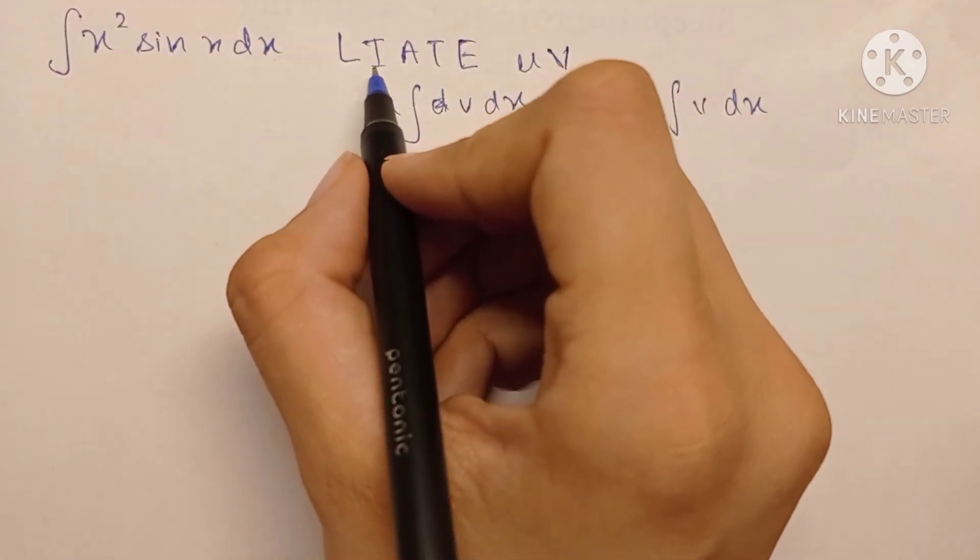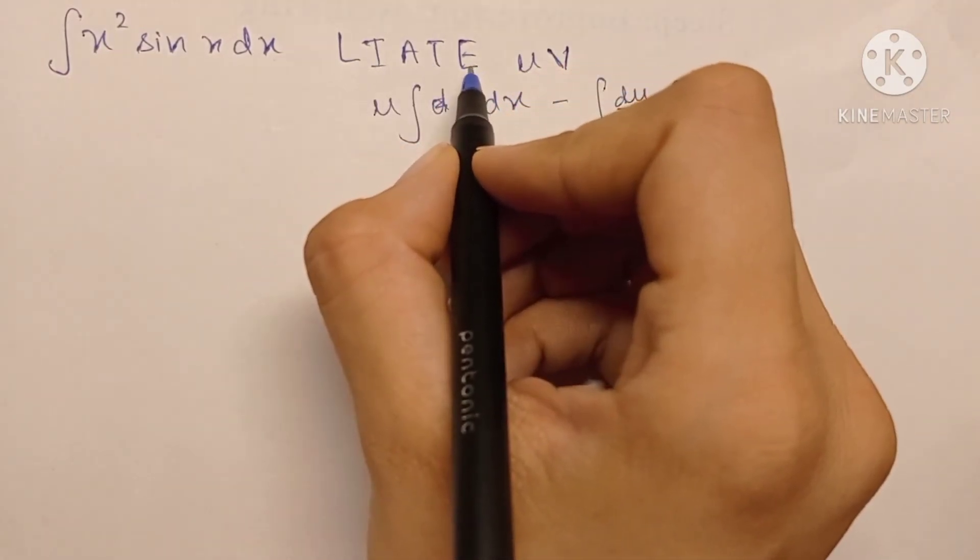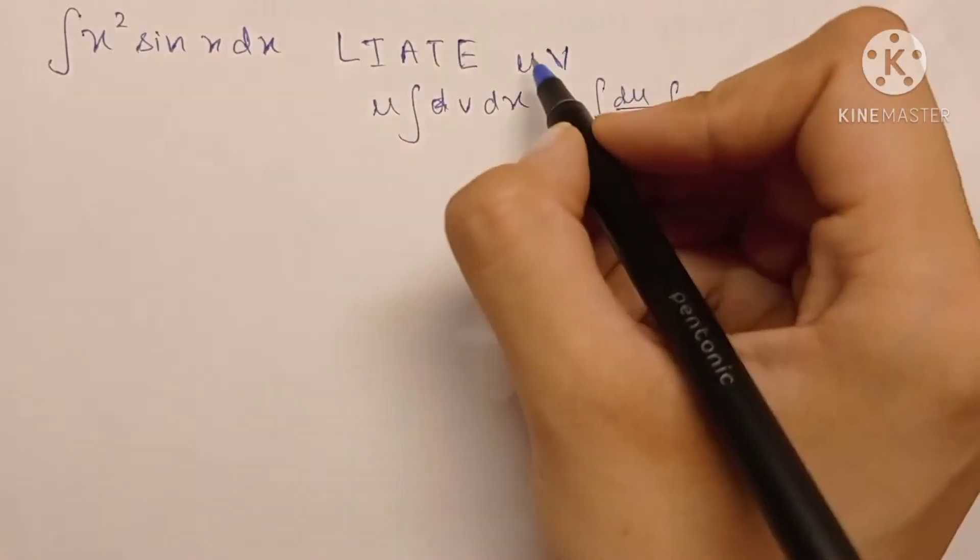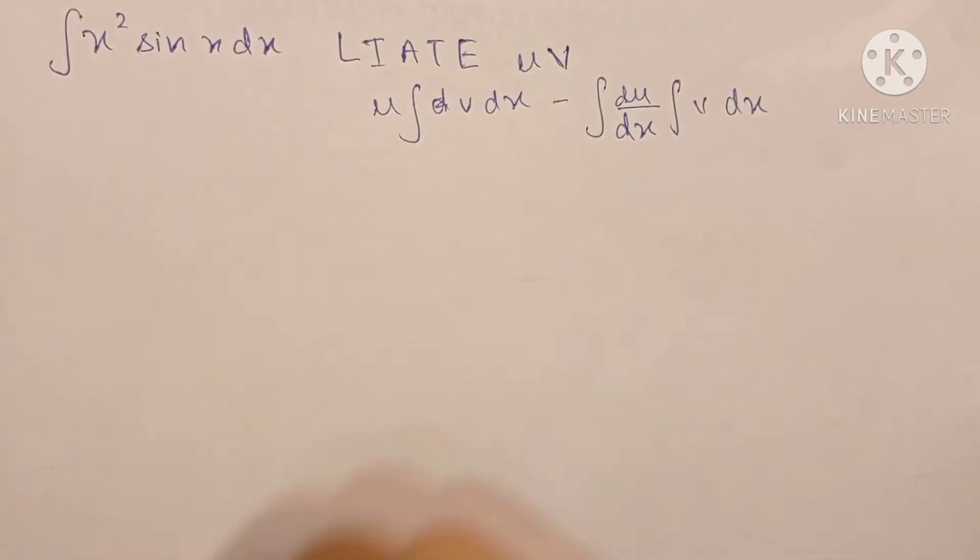It's all on the basis of which is easier to differentiate and which is easier to integrate. So logarithmic comes before inverse trigonometric, which comes before algebraic, which comes before trigonometric.